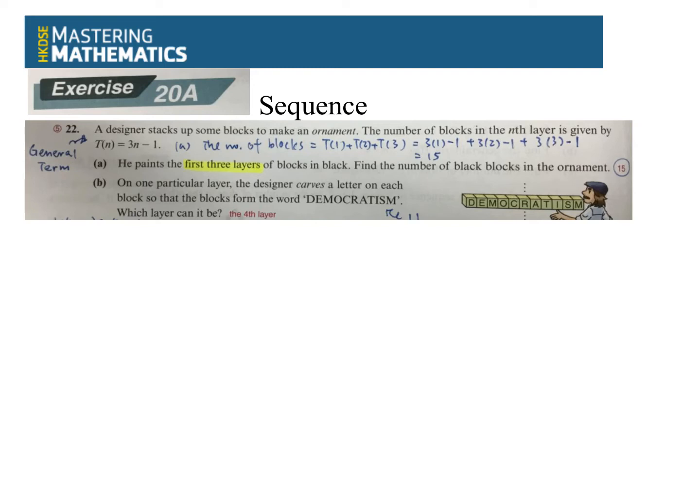大家好,我是Mr. Munso. 今天會為大家講的就是 Mastering Mathematics Exercise 20A Sequence Question 22. A designer stacks up some blocks to make an ornament. The number of blocks in the nth layer is given by T(n) equals 3n minus 1.